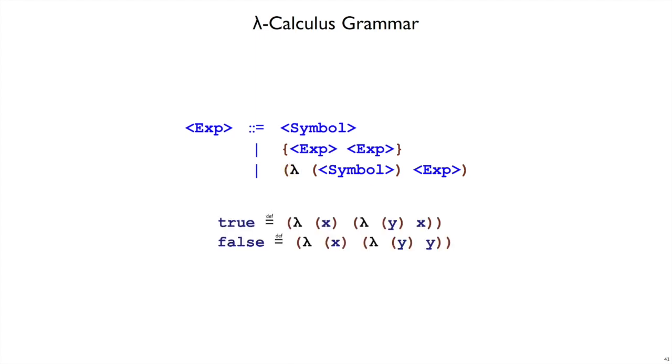So that means that our true encoding will actually write like this from now on: lambda x, lambda y, x. Same thing, just using parentheses and using the letter lambda.